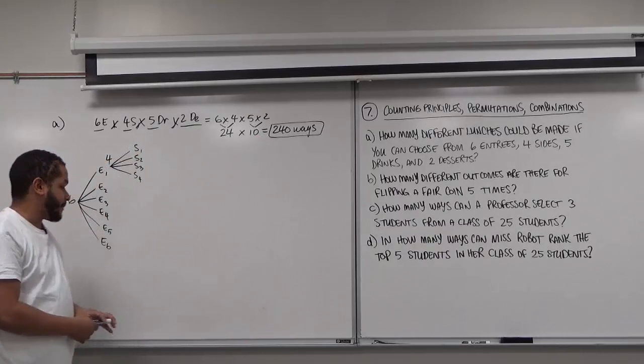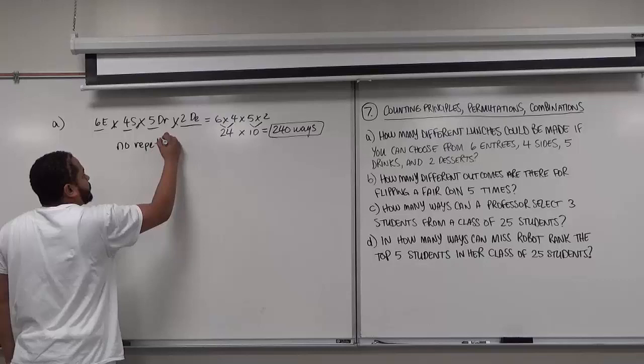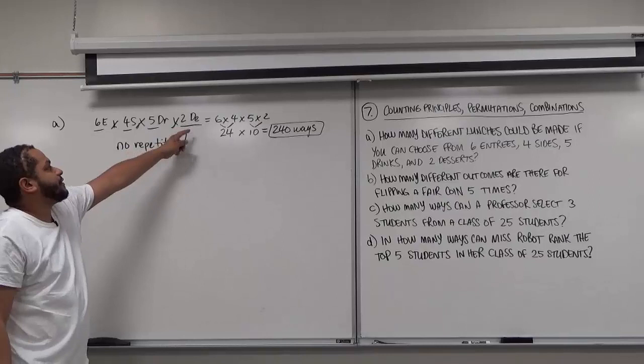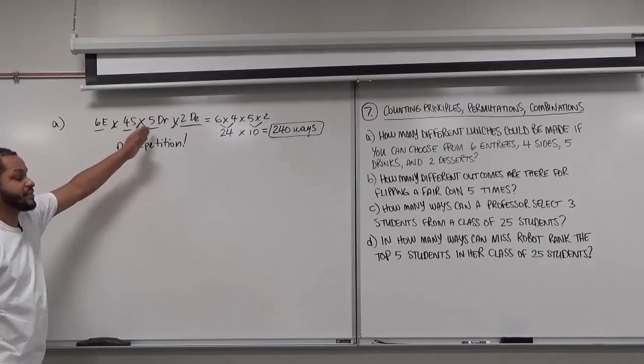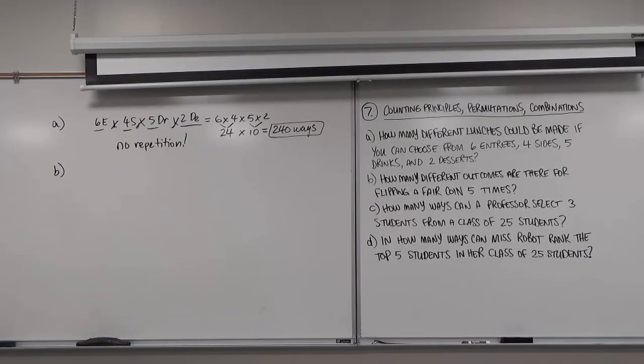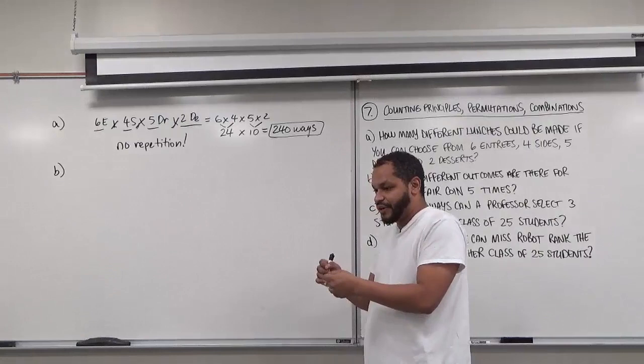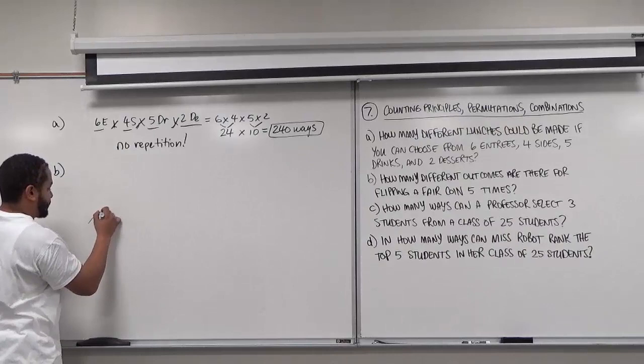Remember there's no repetition here — every selection has to be per different things. We have an entree, a side, a drink, and a dessert, and we can't repeat. Now let's move on to Part B: how many different outcomes are there for flipping a fair coin 5 times? When we're flipping a coin 5 times, we have to understand that repetition is occurring because every occurrence of the flip will be the same. Starting a tree diagram for the first flip, we have either heads or tails, and in every occasion the outcomes repeat themselves.